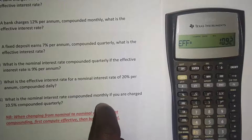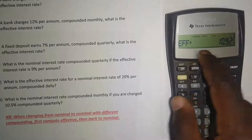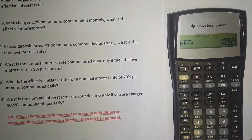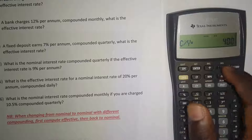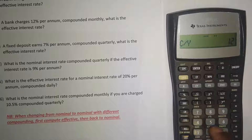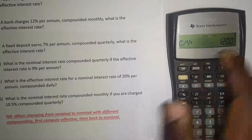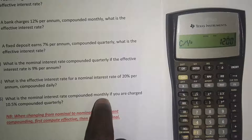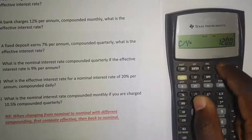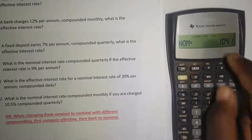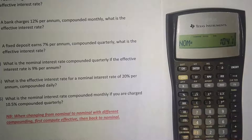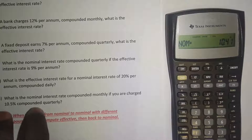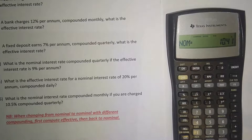Now we have the effective rate of 10.92 percent and need to convert back to nominal compounded monthly. Either clear your work and enter the effective of 10.92, or press the downward arrow and update the compoundings to 12 for monthly. Press Enter, then the downward arrow again, and compute. The nominal interest rate compounded monthly is 10.41 percent — equivalent to a nominal rate of 10.5 percent compounded quarterly.